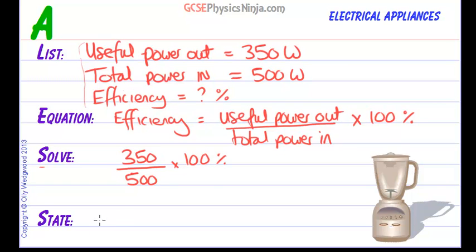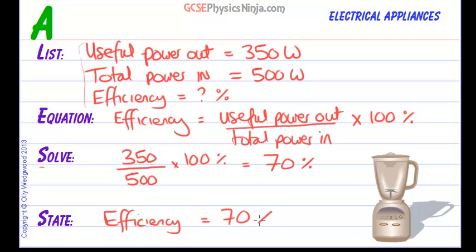That gives us 70%. State the answer with the unit — remember that efficiency does not have units, it's just a percentage or a fraction. So the efficiency of this appliance equals 70%. That means if you put in 100 joules, then 70 joules will come out as useful kinetic energy, or if you put in 100 watts, then 70 joules per second will be useful power out.